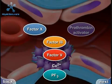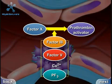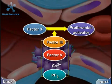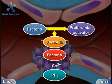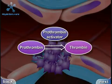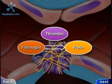Active factor 10, along with factor 3, factor 5, calcium ions, and platelet thromboplastic factor PF3, will activate prothrombin activator. Prothrombin activator converts prothrombin to thrombin. Thrombin then converts fibrinogen to fibrin.